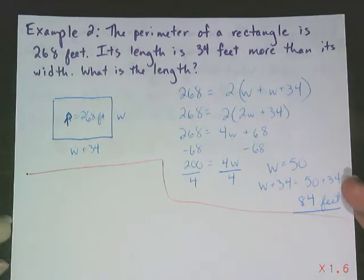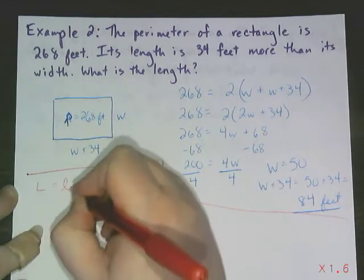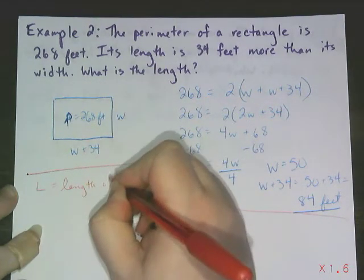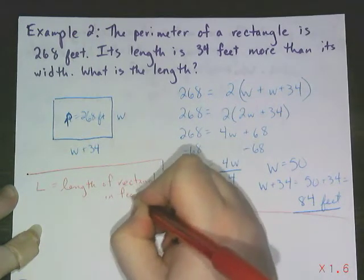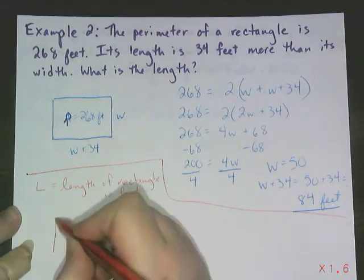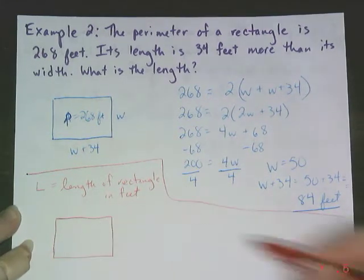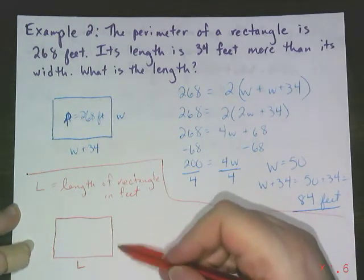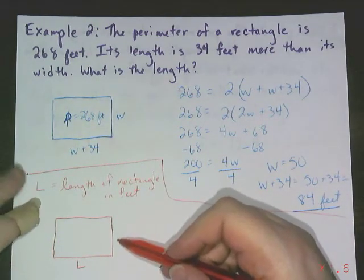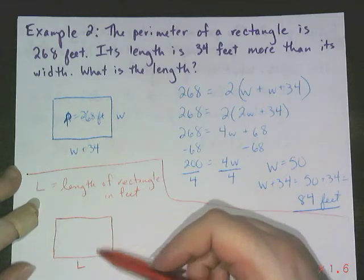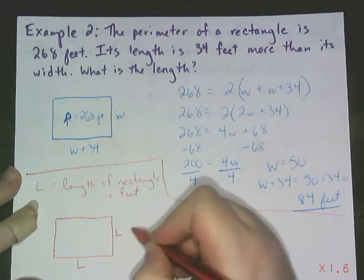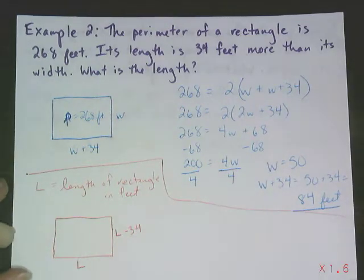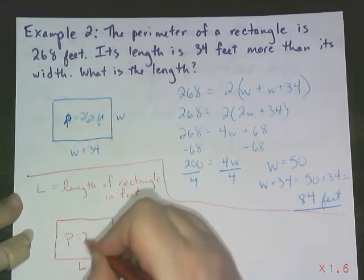Remember, you should start by defining your variable right away. I want to know the length. I want to know L for the length of the rectangle in feet. Include units when it is appropriate. So now when I label my diagram, this is L. I don't want to call this side W. I haven't labeled a W. I haven't defined a W. But I know that the length is 34 feet more than the width. So the opposite, the width is 34 less feet than the length. I still know my perimeter is 268 feet.